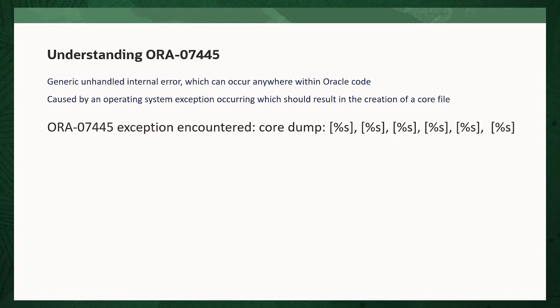The impact can vary from just being an annoyance that shows up in your logs once in a while, to something major that brings the database down. When the error is logged, it includes a list of arguments in square brackets. The first argument can be useful to narrow down to known issues, as it indicates the function where the error was encountered.